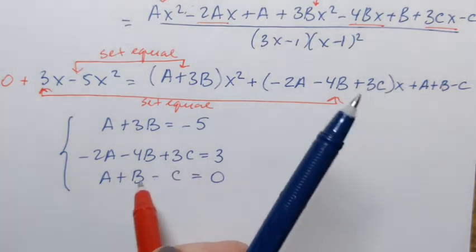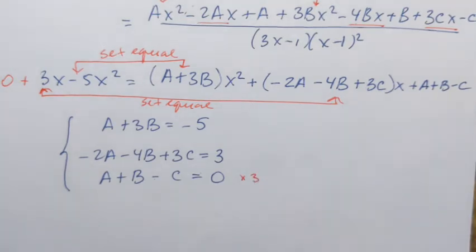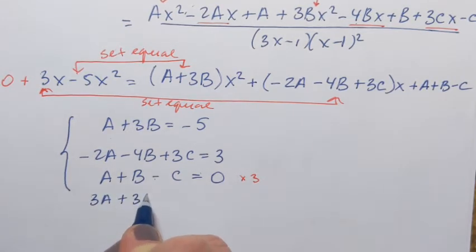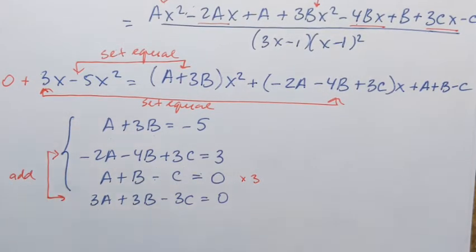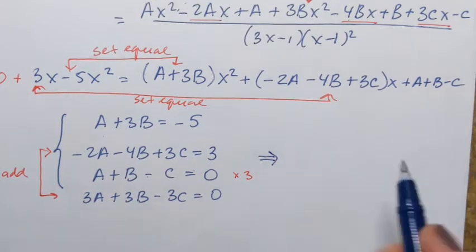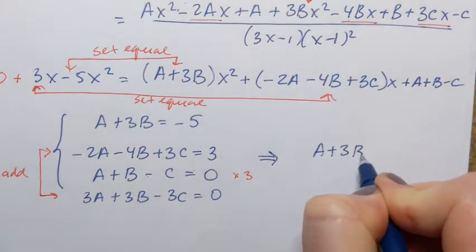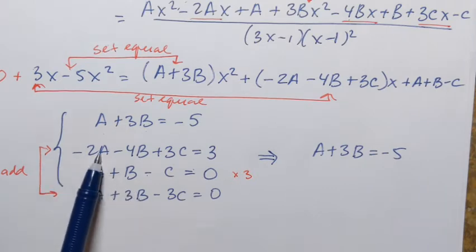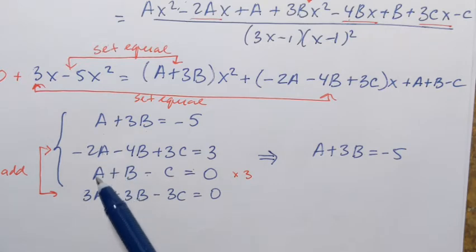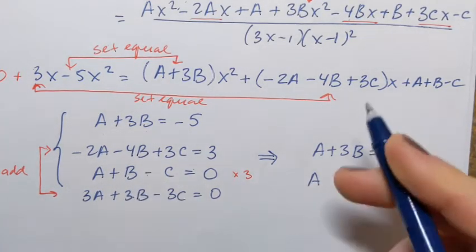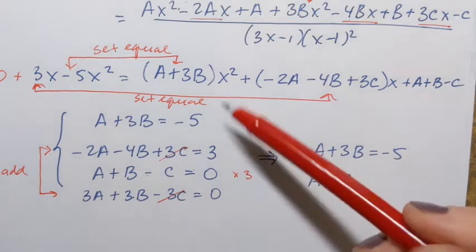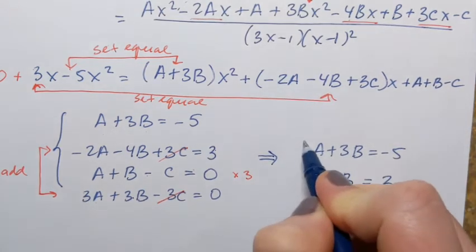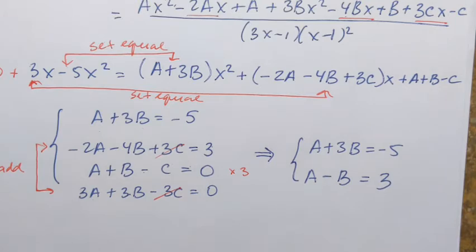To eliminate c, I need opposites. I have 3c in equation 2, so I multiply the third equation by 3 to get 3a plus 3b minus 3c equals 0. Adding equations 2 and the updated equation 3: negative 2a plus 3a is a, negative 4b plus 3b is negative b, and positive 3c plus negative 3c cancels. The right-hand side is 3 plus 0, giving a minus b equals 3.